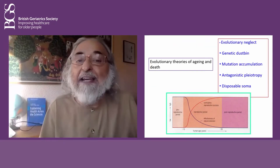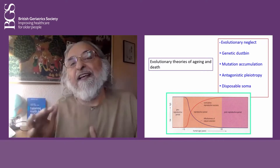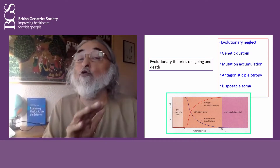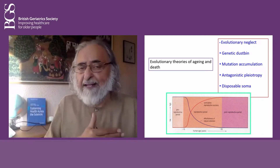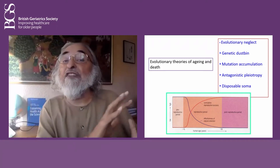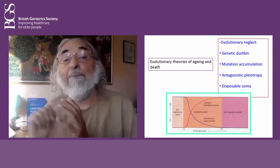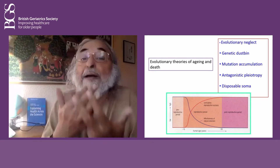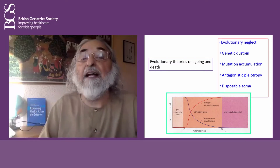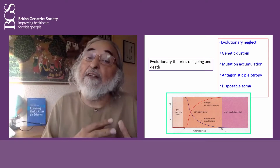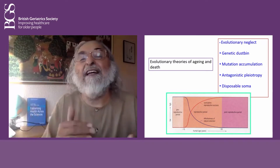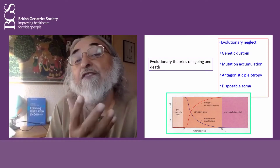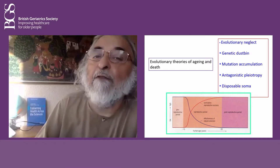Evolutionary theories give us explanations for why aging is allowed to happen after essential lifespan. The major areas are: evolutionary neglect — because things are happening during essential lifespan, evolution ignores the other part; mutation accumulation, which is allowed to happen later in life; antagonistic pleiotropy, where some good things selected early in life become bad in old age, like cholesterol metabolism or fat accumulation; and the disposable soma theory — a very powerful theory that somatic cells are created in a disposable manner and don't have to survive forever.